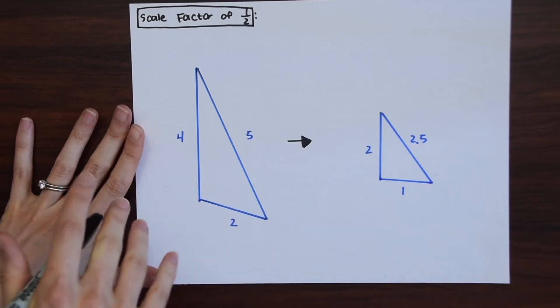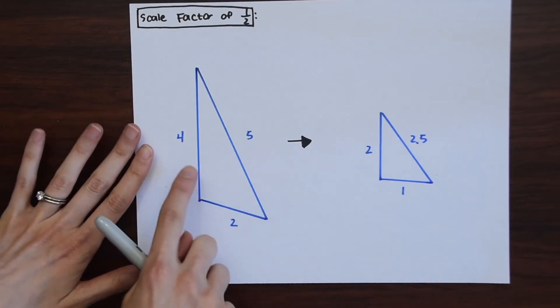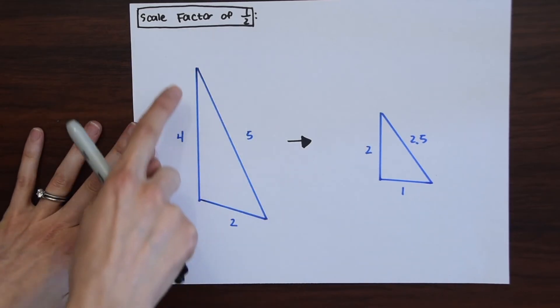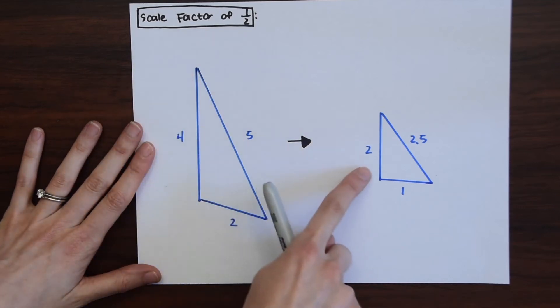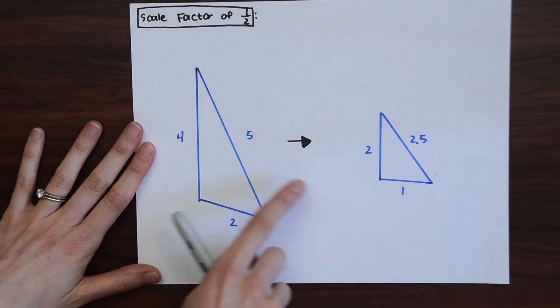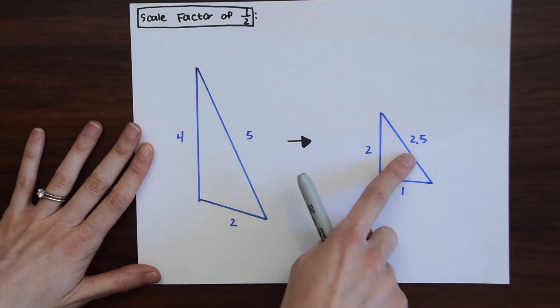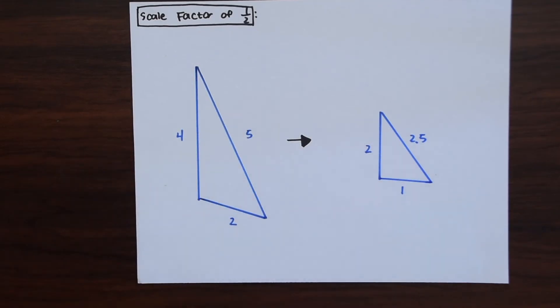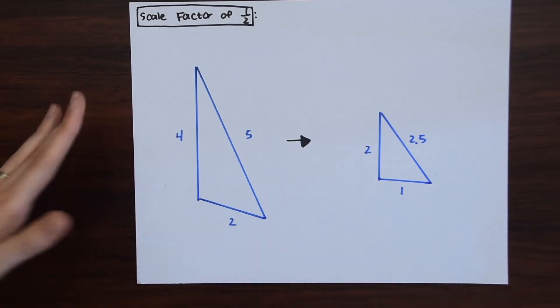So in this triangle you see the same thing, we're just multiplying times the scale factor each side length. So 4 times 1 half we get 2, 2 times 1 half we get 1, and then 5 times 1 half we get 2.5. So that's all dilations are, making shapes bigger or smaller and using the scale factor to carry that out. So we always multiply the scale factor times the length and times a coordinate point.